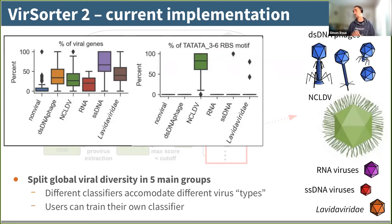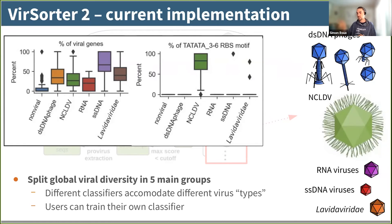One quick note: Jiarong built a nice framework where, if you are not happy with these five groups, you can design your own groups and train your own classifier to work within VSorder2.